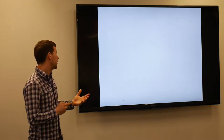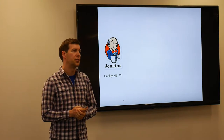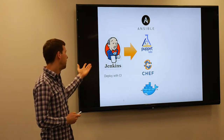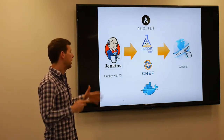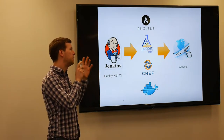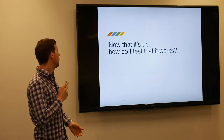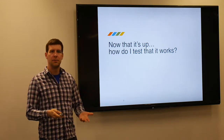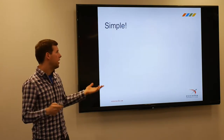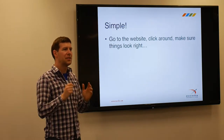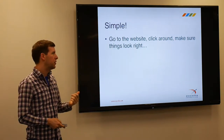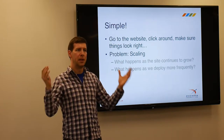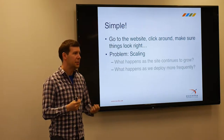So this is what my typical day looks like. I have Jenkins as my deployment tool — an automation system that lets me run jobs. I use a tool like Ansible, Puppet, Chef, or Docker to deploy something to a server. That's straightforward. But the question is, now that it's up, how do I know that it's working? Oftentimes the answer is just go on the website and click around and make sure it works.